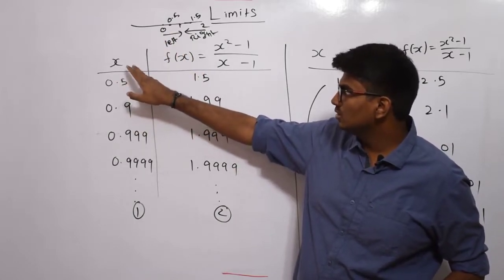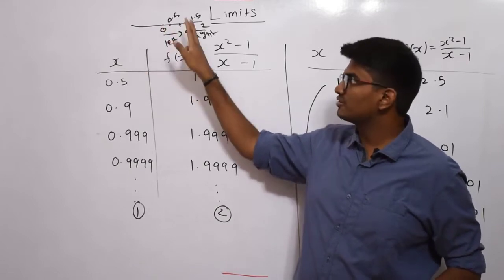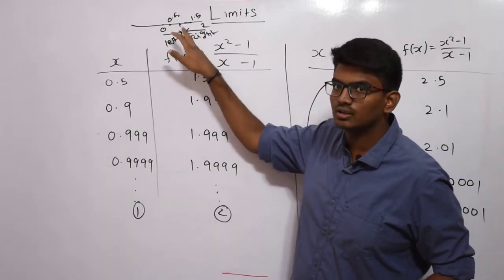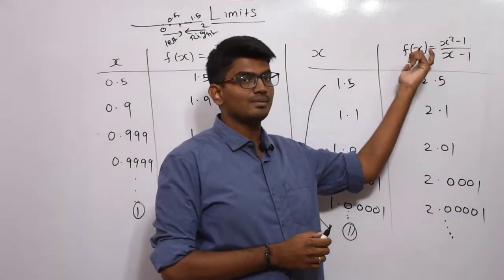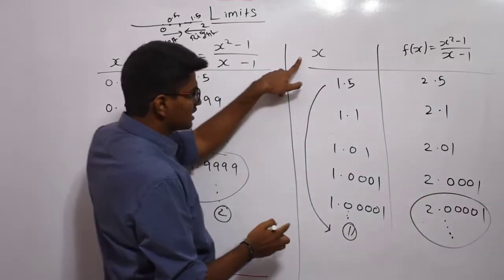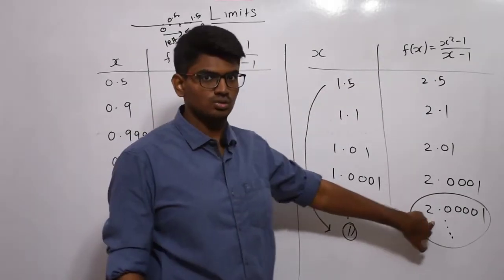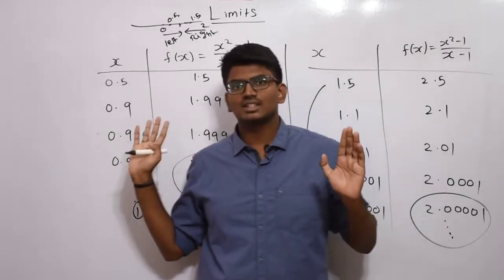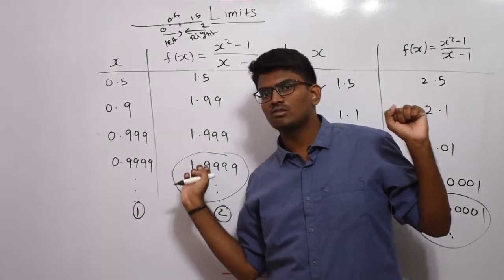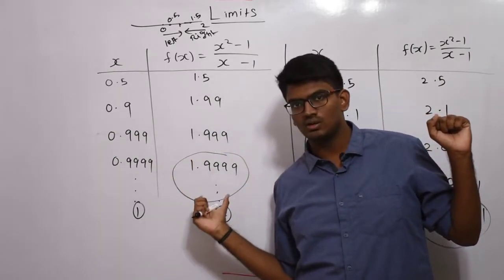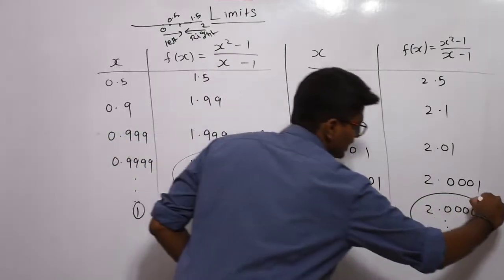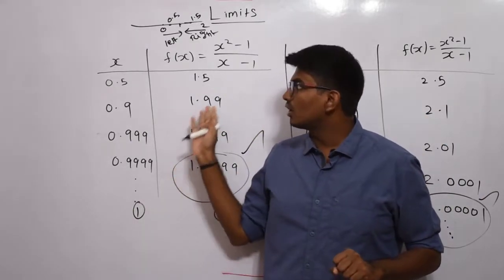So what is happening: if I approach x closer and closer to 1 from the left side, f(x) approaches towards 2. Same way, if I approach x closer and closer to 1 from the right side, f(x) also approaches closer to 2. Both times, when I approach x closer to 1, I get f(x) closer to 2. That is what we call the limit. When approaching from both left and right gives the same value of f(x), then we say the limit exists.